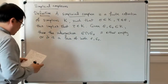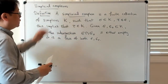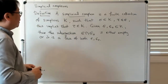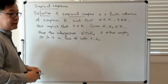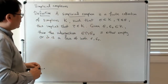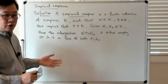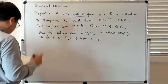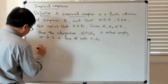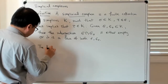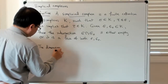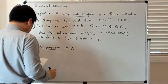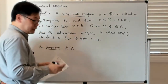Of course, if you have a simplex you can talk about its dimension. So when you have a collection of simplices, in particular a simplicial complex, we also want to talk about the dimension of that simplicial complex. The dimension of K is the maximum dimension of the simplices it contains.